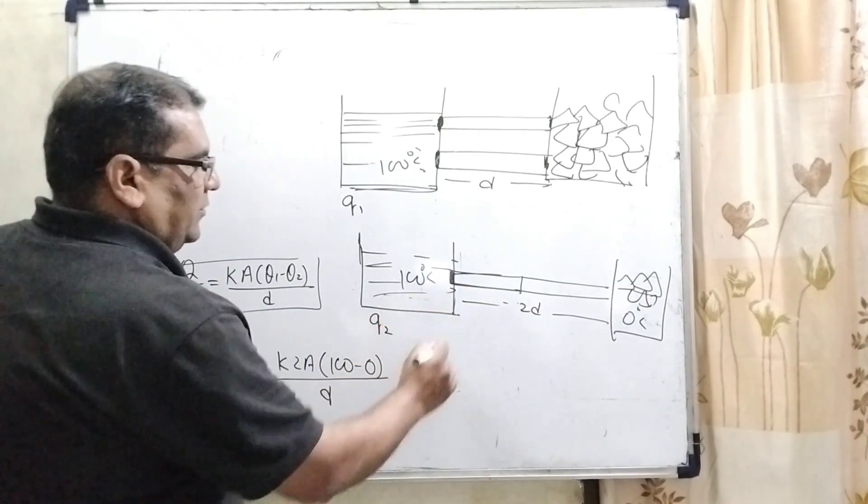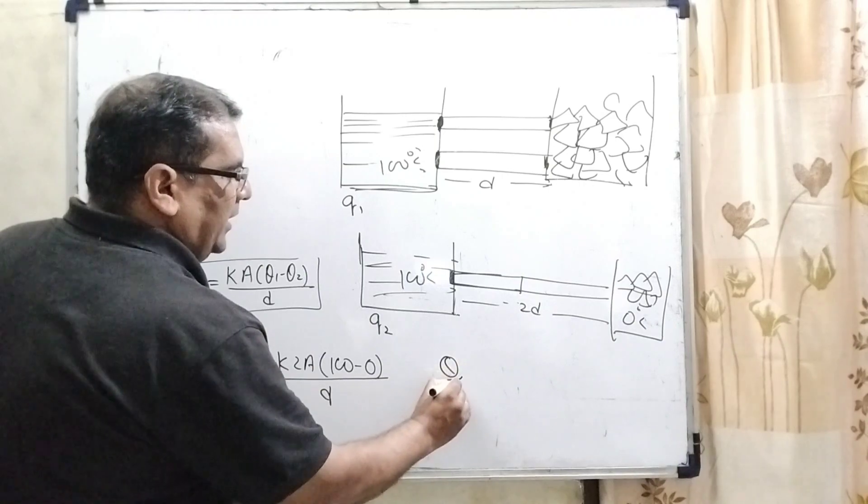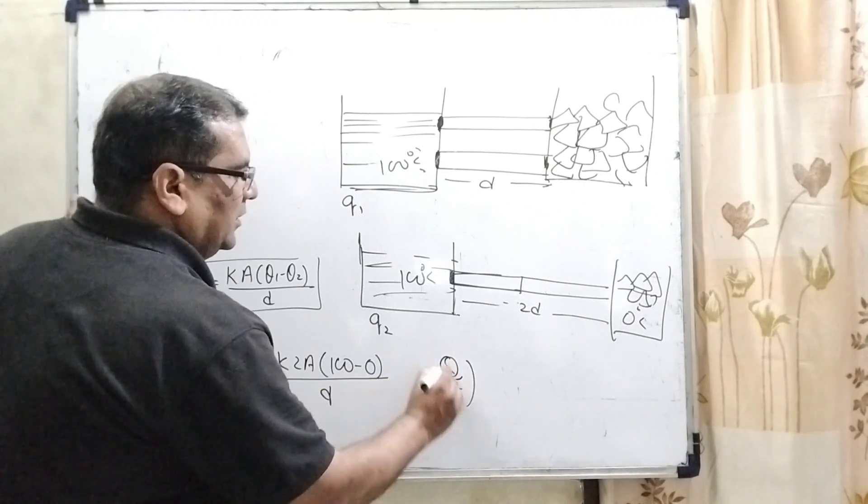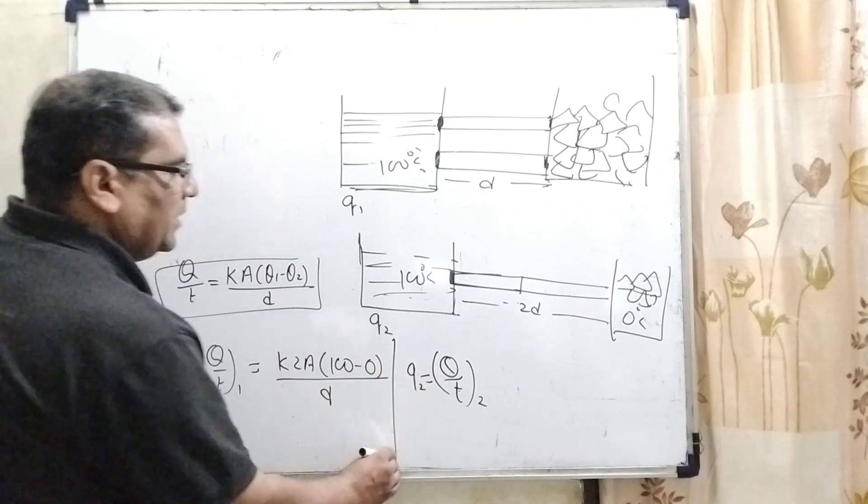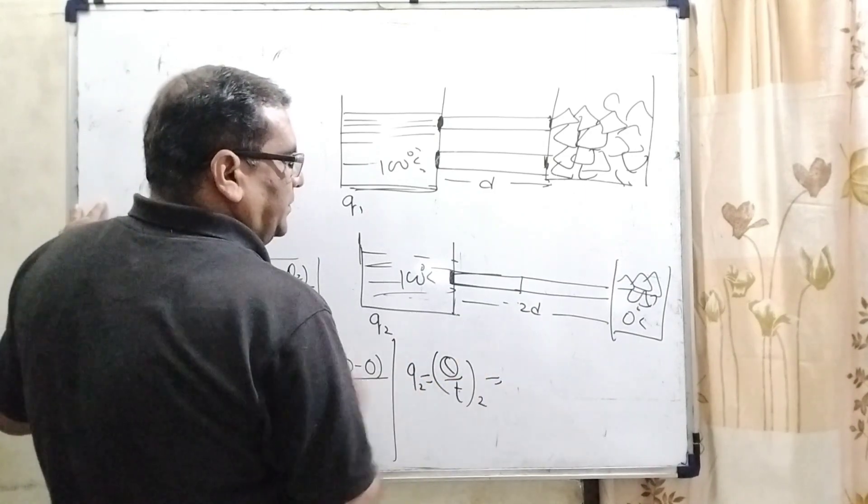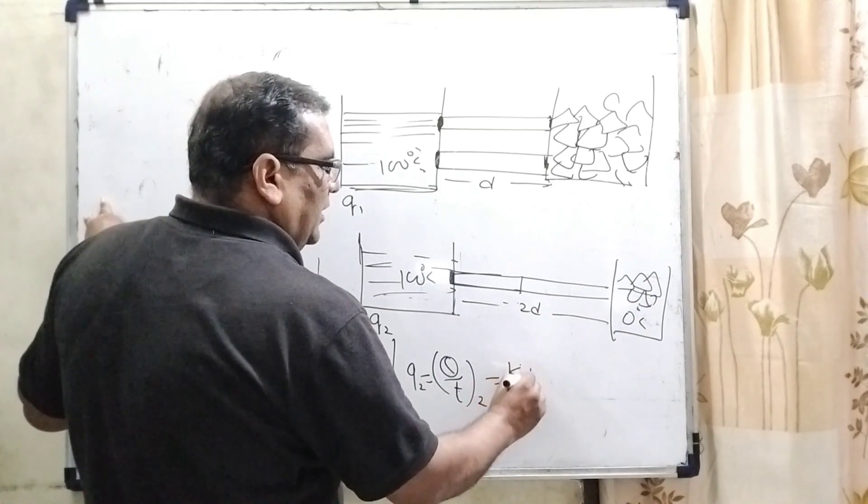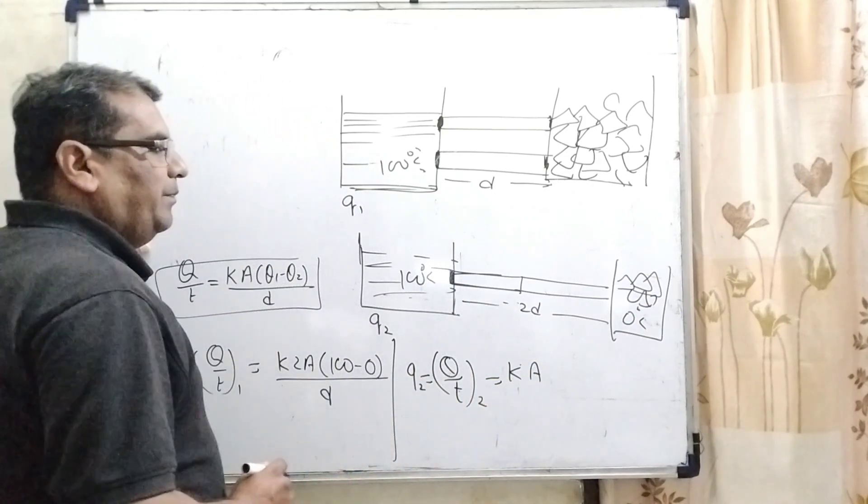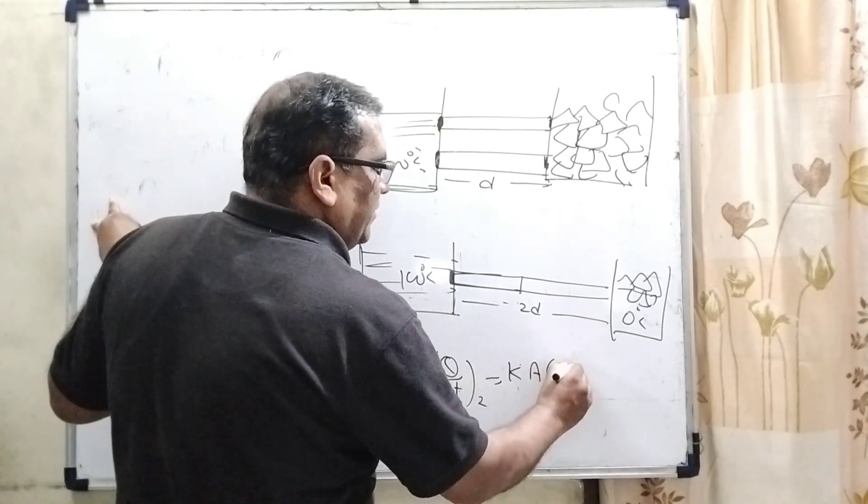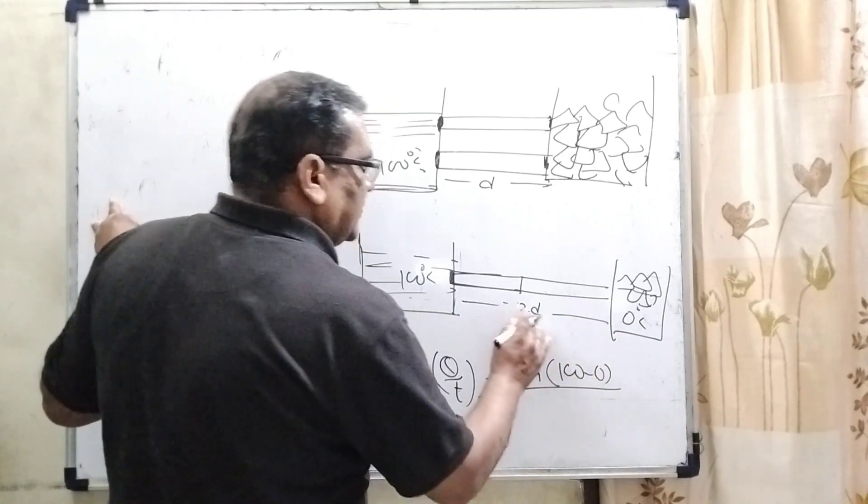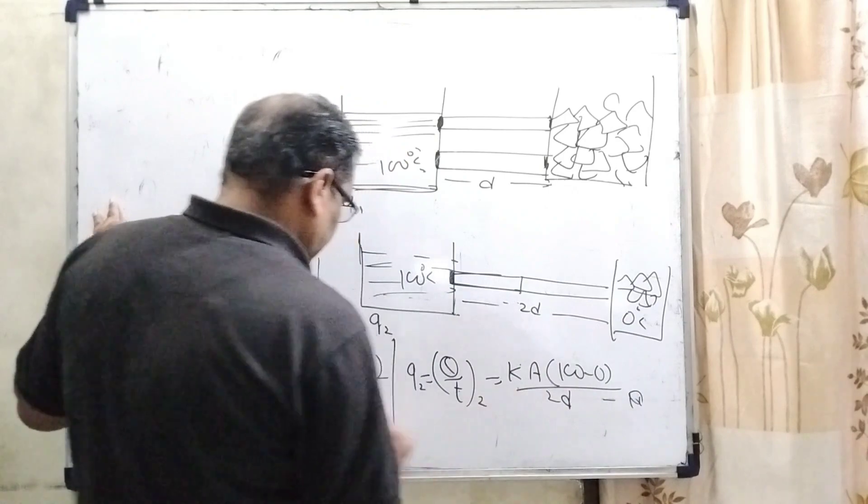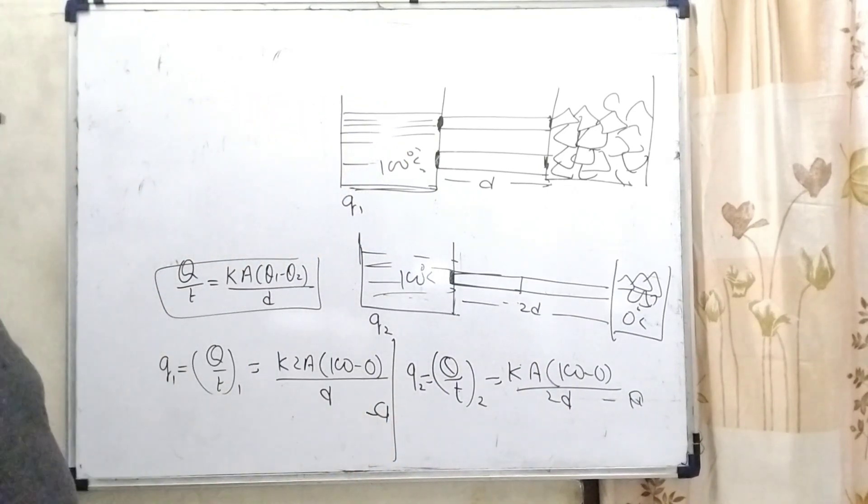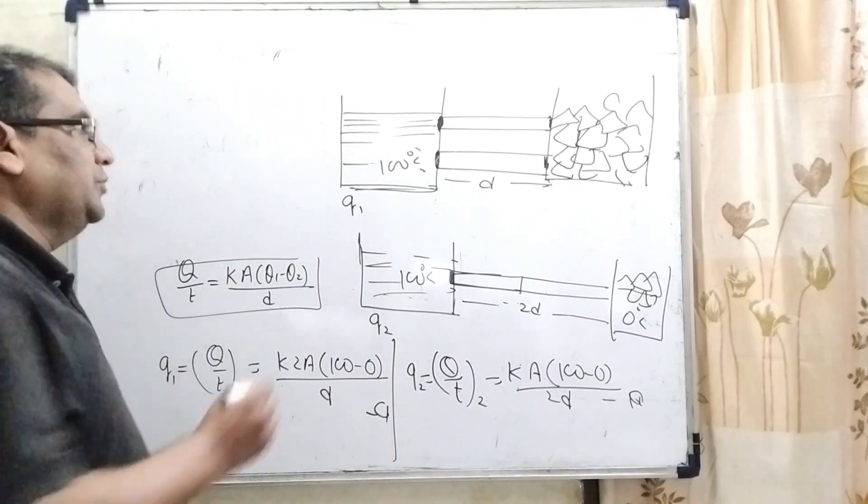And for the second case, we can see that Q by T, let us say this is second case Q2. So here, K is the same, area of cross section is A, temperature 100 minus 0, and distance here we have taken 2D. It is the second case, this is first case, and we have to calculate Q1 upon Q2.